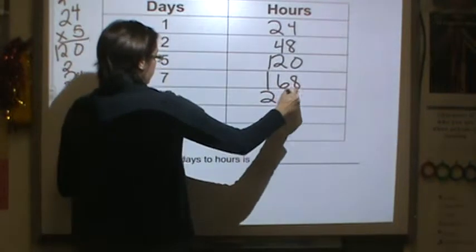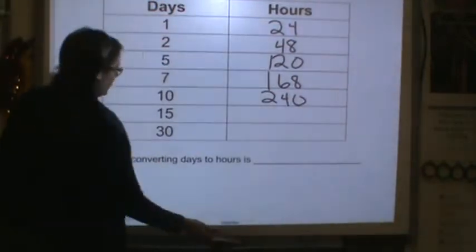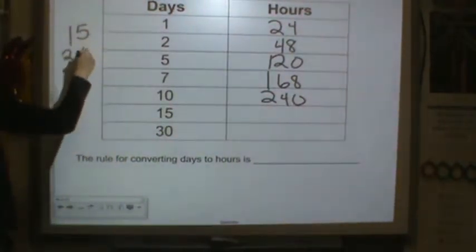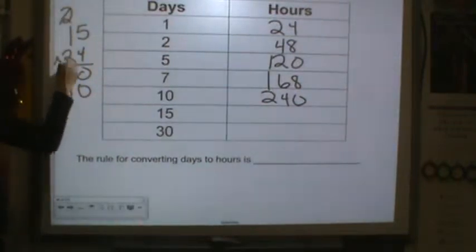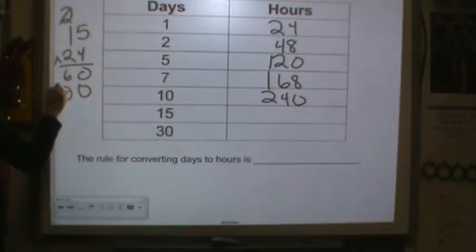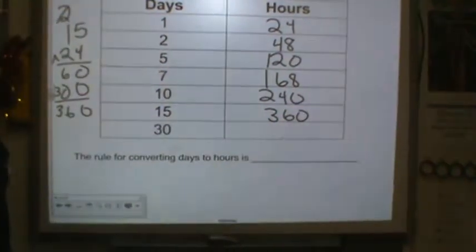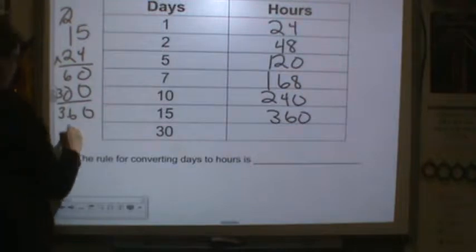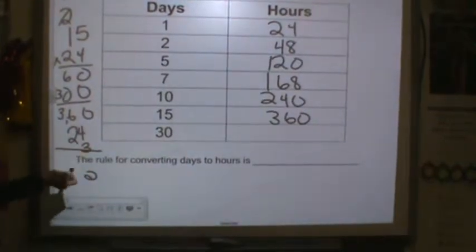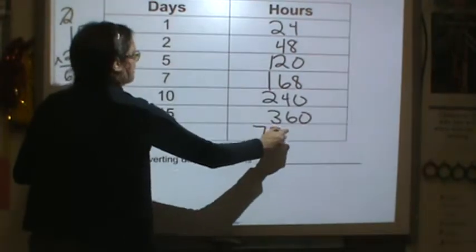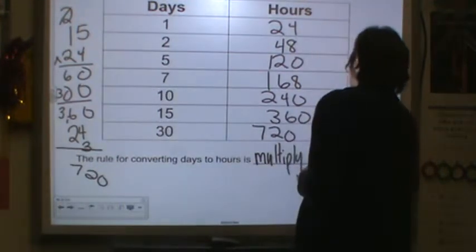10, that's easy, that would be 240 because it's a basic fact. 15, I don't know 15 times 24 off the top of my head, so I'll just do some quick multiplication. 1s times the 1s, 1s times the 10s, drop a 0, 10s times the 1s, 10 times the 10s. So we have 360 hours in 15 days. And then 30, I don't know 30 times 24 off the top of my head. 4 times 3 is 12, 2 times 3 is 6 plus 1 is 7. Remember I have to add that 0 for 30, so we have 720 hours. So the rule for converting days to hours is multiply by 24.